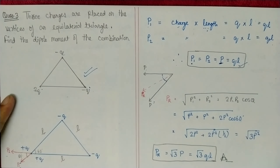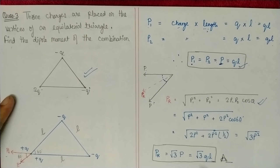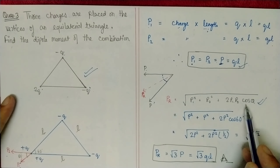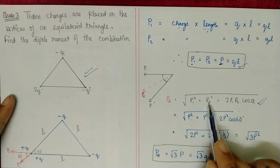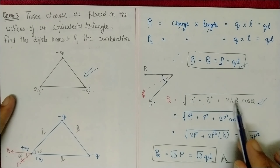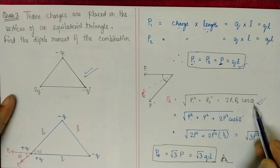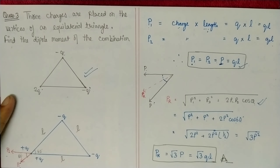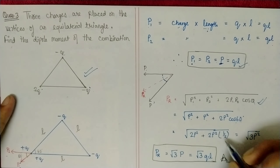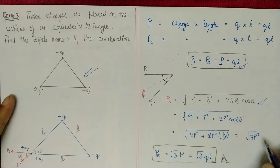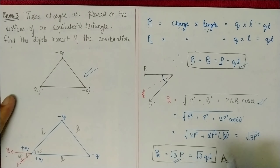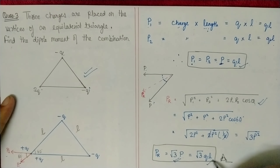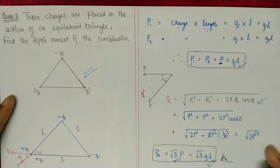Using the resultant formula: √(p₁² + p₂² + 2·p₁·p₂·cos60°). Since p₁ = p₂ = p and cos60° = 1/2, this becomes √(p² + p² + 2p²·½) = √(3p²) = p√3. Substituting p = qL, the net dipole moment is √3·qL.